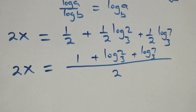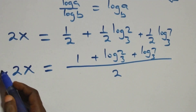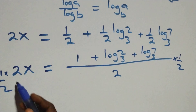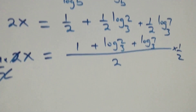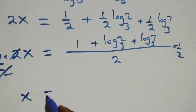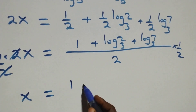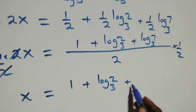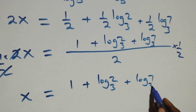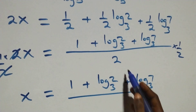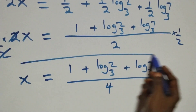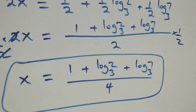Then we bring this together as one fraction: 2x equals 1 plus log 2 base 3 plus log 7 base 3, all over 2. Now multiply both sides by 1 over 2. The 2s cancel each other and we have x equals 1 plus log 2 base 3 plus log 7 base 3, all over 4.